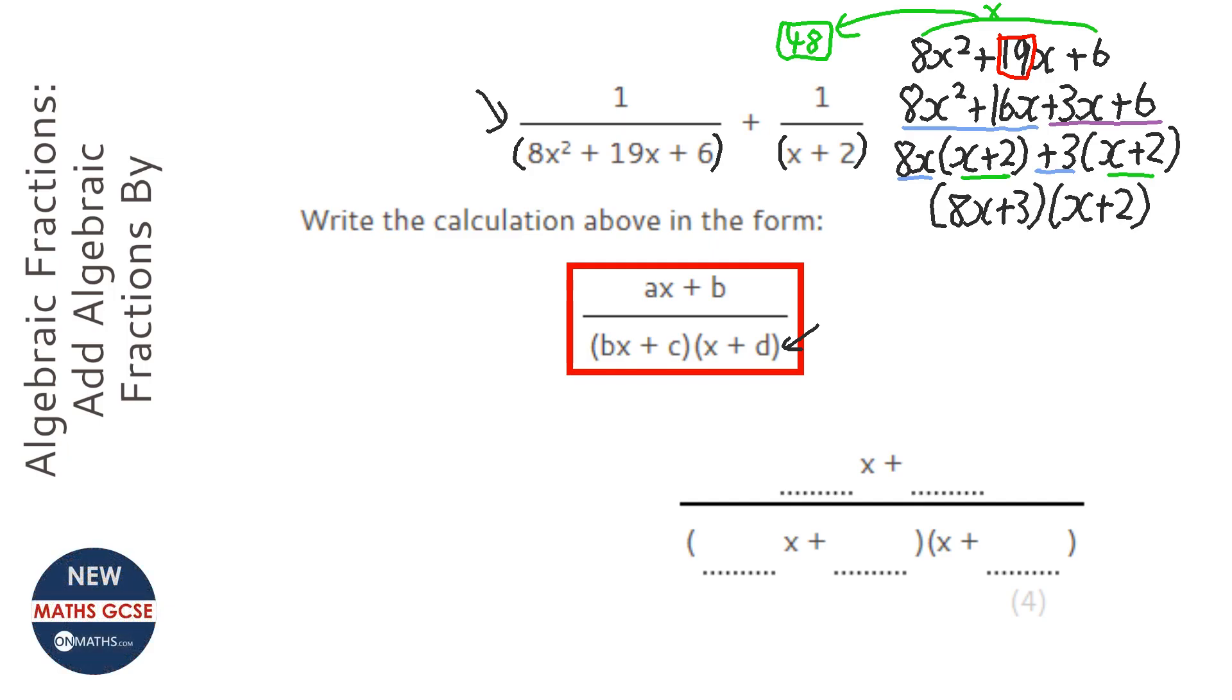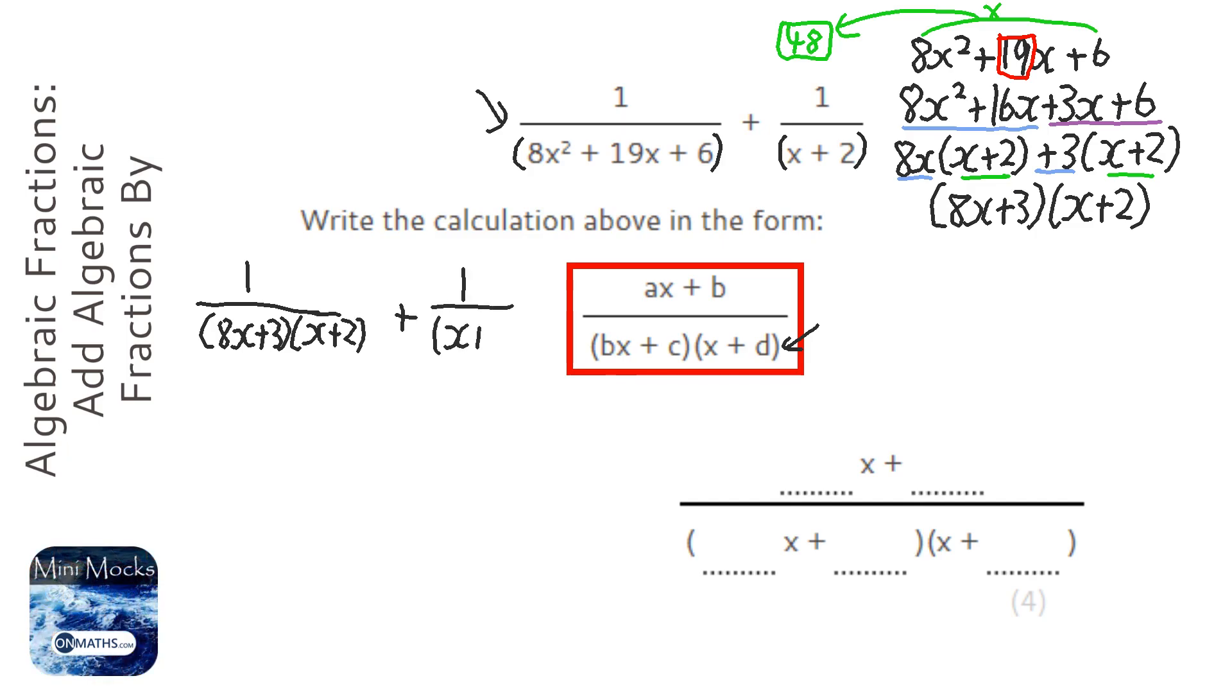Cool. So I can rewrite that. Now I'm going to rewrite the question. So now it becomes 1 over 8x plus 3 times x plus 2 plus 1 over x plus 2.